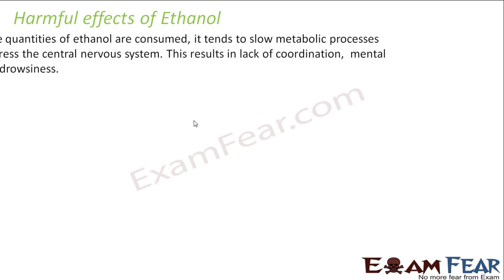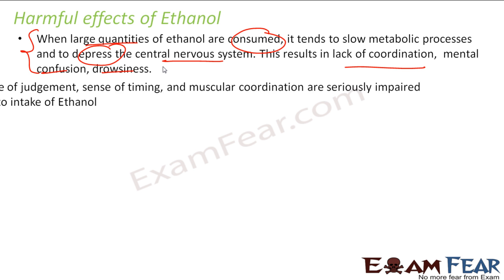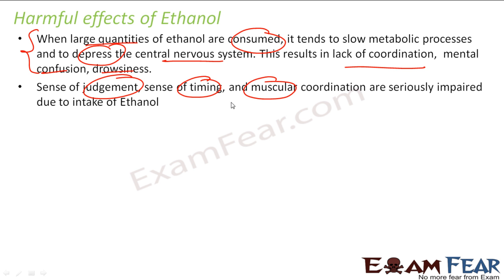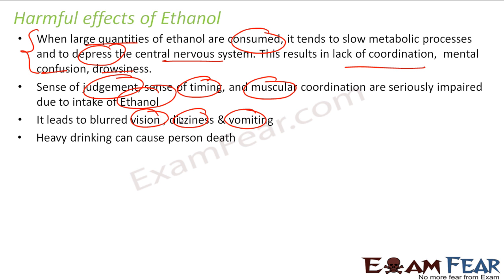There are some harmful effects of ethanol too. When consumed in large quantity, it depresses the central nervous system — it causes lack of coordination, confusion and drowsiness. A drunk person behaves very weird because ethanol has depressed their nervous system. The sense of judgment, sense of timing, and muscular coordination are all impaired. It also leads to blurred vision, dizziness and vomiting. Many car accidents occur because of drunk driving, and heavy drinking can also lead to death.